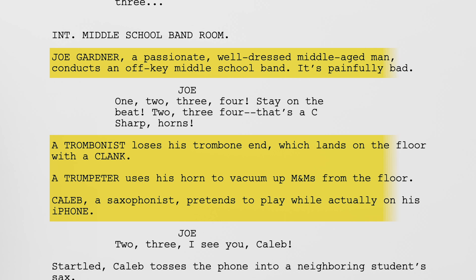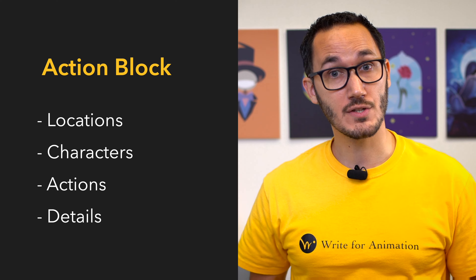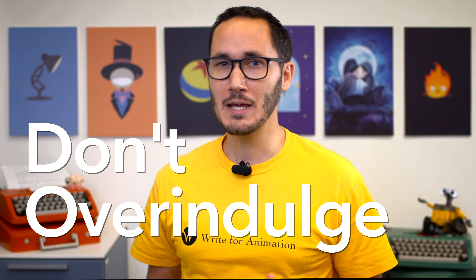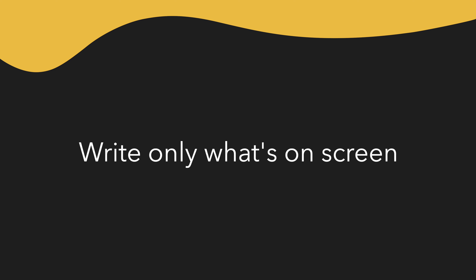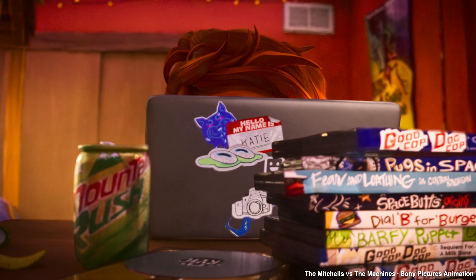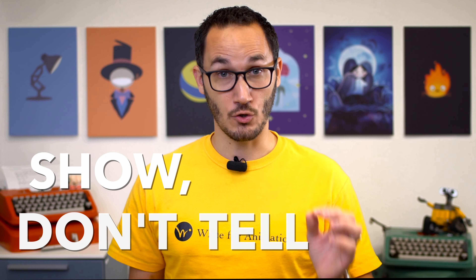Now, the action block. Here is where you write a description of what the audience sees and hears, excluding dialogue. You should describe locations, characters, actions, and any details — but don't overindulge. Keep it as short as you can and write only what's important. Remember that scripts are written in the present tense. This relates to the most important principle you can learn about screenwriting format: write only what's on screen. Show, don't tell. Make your writing visual and dynamic.